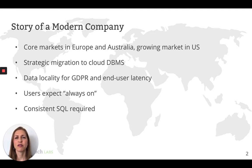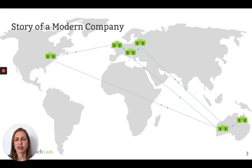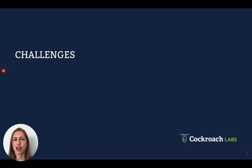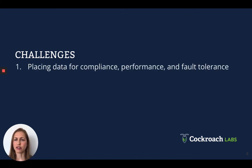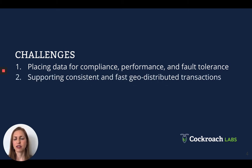Finally, to simplify application development, the database must provide strongly consistent SQL. This is a real company, and as you might expect, I'm telling you the story because the database they chose was CockroachDB. This graphic shows the plan for their CockroachDB deployment. This is just one company, but we designed CockroachDB to support workloads like this because we think their requirements are becoming more and more common. There are a number of challenges with supporting workloads like this, but in the interest of time today I'll focus on two. The first challenge is how to place data for compliance, performance, and fault-tolerance reasons. The second challenge is how to support consistent and fast geo-distributed transactions.